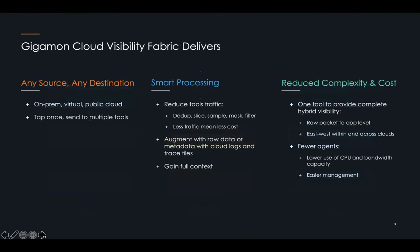So really three things that Gigamon Hawk delivers. First, any source, any destination. We can tap into those sources once, optimize the information, and then send it to multiple tools as necessary.